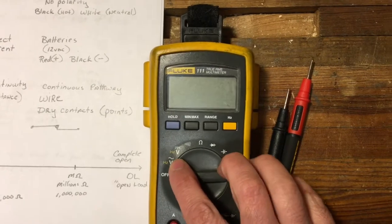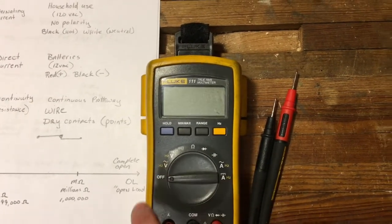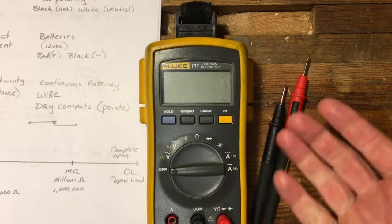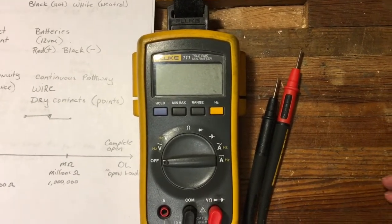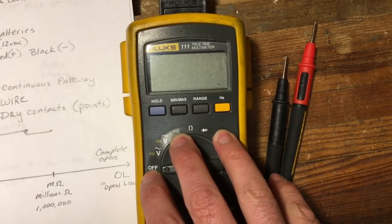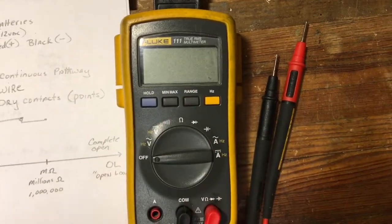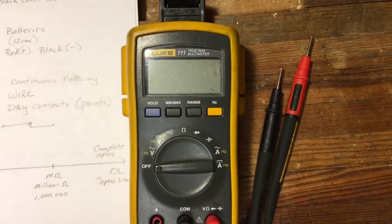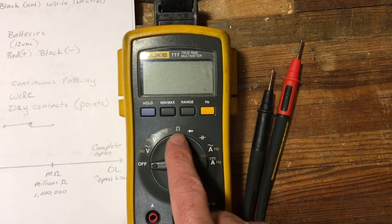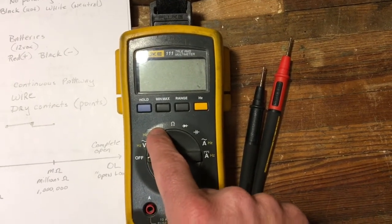On a multimeter, you're going to have emblems like this V with a squiggly line, which is AC voltage. If you're testing like at home 120 volts, you would use this setting. The V with a dash line is DC, so if you're testing a battery or DC power supply, you would use this setting. These two emblems - a sound wave and a horseshoe - are for testing continuity. The beeper gives you an audible sound if you have a complete circuit. The ohms emblem tells you the exact resistance of that circuit.